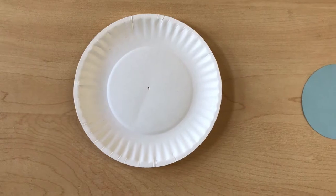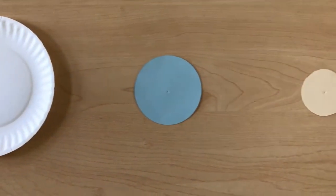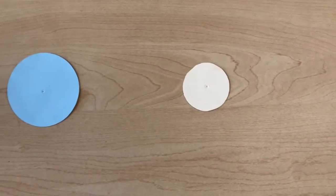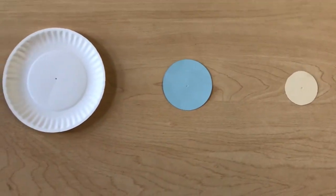Cut out three different size circles for your Sun, Earth, and Moon. Color them in if you want.